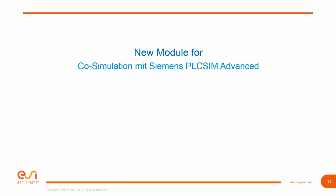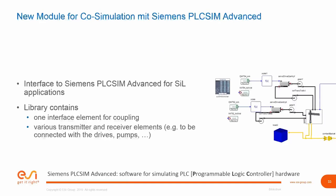Also new in SimulationX 4.0 is a module for co-simulation with Siemens PLC SimAdvanced. The module contains an interface to connect Siemens PLC SimAdvanced solutions with a SimulationX model for software-in-the-loop simulation — meaning you simulate the controller code with Siemens PLC SimAdvanced and connect it to a SimulationX model to test how the controller influences your machine or plant and whether it behaves as intended. The library contains an interface element for coupling as well as various transmitter and receiver elements.